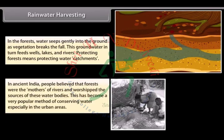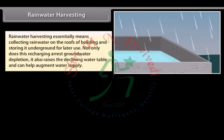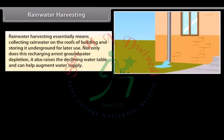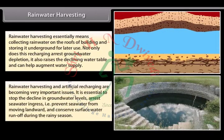In ancient India, people believed that forests were the mothers of rivers and worshipped the sources of these water bodies. Rainwater harvesting has become a very popular method of conserving water, especially in urban areas. It essentially means collecting rainwater on the roofs of buildings and storing it underground for later use. This recharging arrests groundwater depletion, raises the declining water table, and can help augment water supply. It is essential to stop the decline in groundwater levels, arrest seawater ingress, and conserve surface water runoff during the rainy season.